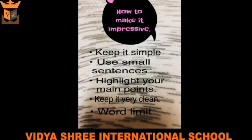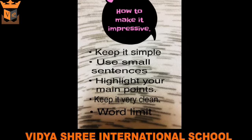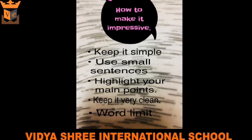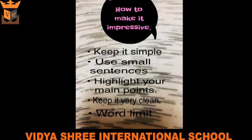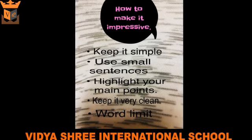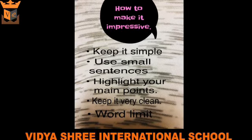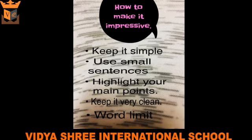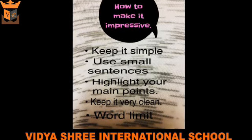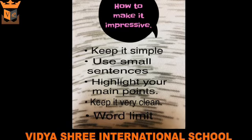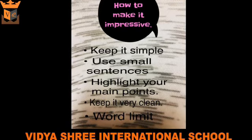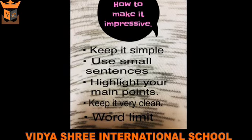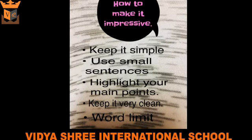Now let's discuss how to make articles impressive. The first point is keep it simple. Don't use ornamented and complicated words or sentences — use simple sentences. Highlight your main points. Keep it very clean and clear. And strictly follow a word limit. Do not make it very lengthy because that can make your article boring. Strictly follow these points to make your article look attractive.